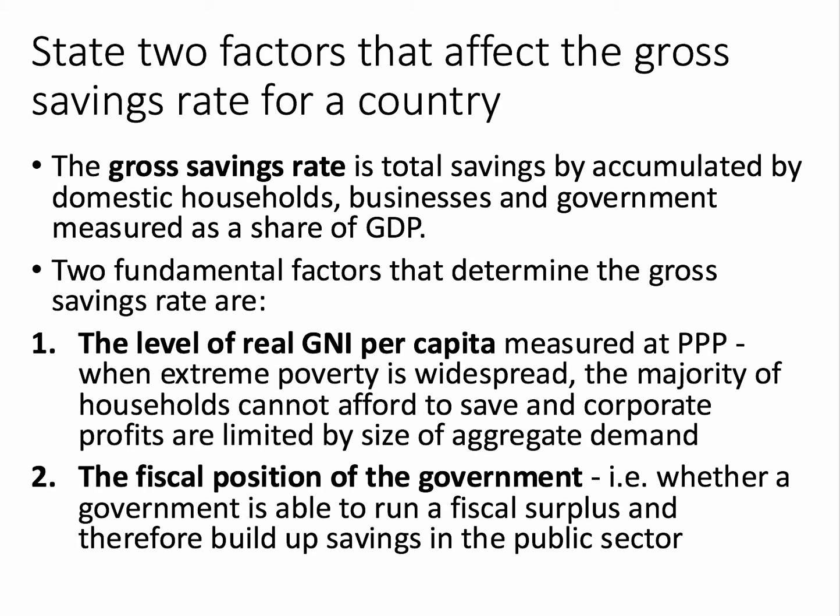Corporate profits in these industries also tend to be constrained by the size of the market and the size of demand. When real GNI per capita goes up, both people and businesses can afford to save more. The government's own fiscal position — the budget balance — is another key factor. For example, if the government is running a budget surplus, it's taking in more tax than it's spending and therefore building up savings in the public sector, adding to gross national savings.